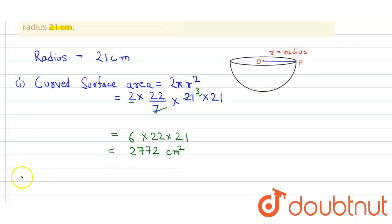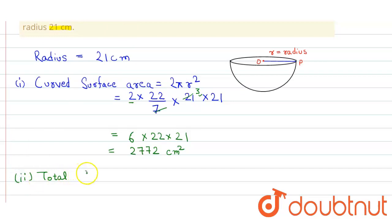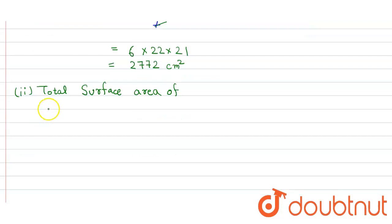In the second part, we have to find the total surface area of the hemisphere. The formula for the total surface area of a hemisphere is equal to 3πr².